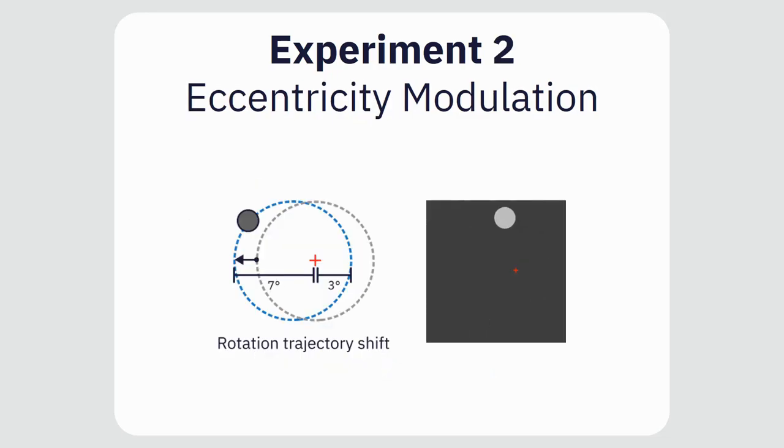In experiment 2, we slightly shifted the center of the rotation trajectory. This allowed us to modulate the dot's eccentricity during its rotation.